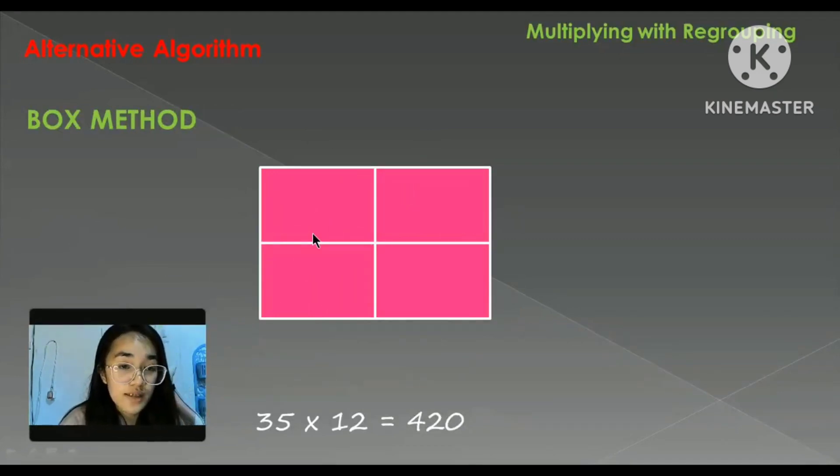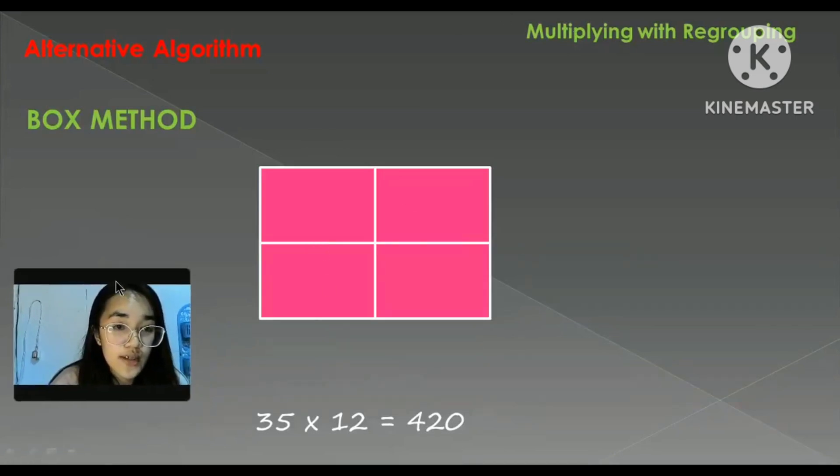Next, we also have the box method. So by using the place value. Since 35 is in 10th digit, so we will write it here: 30 and 5.